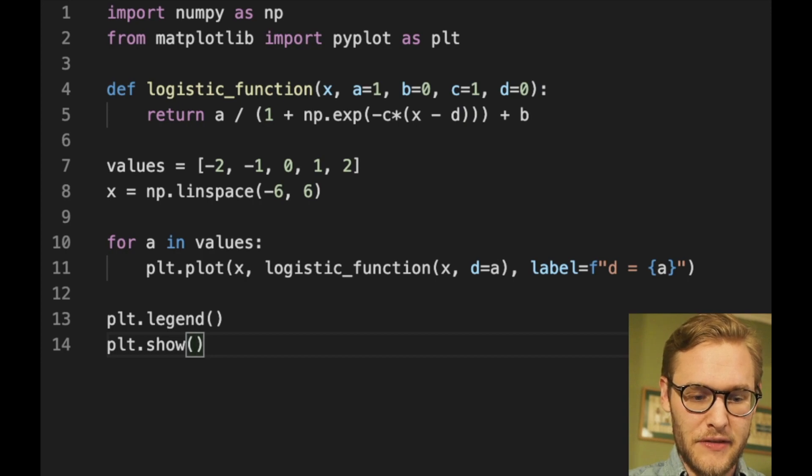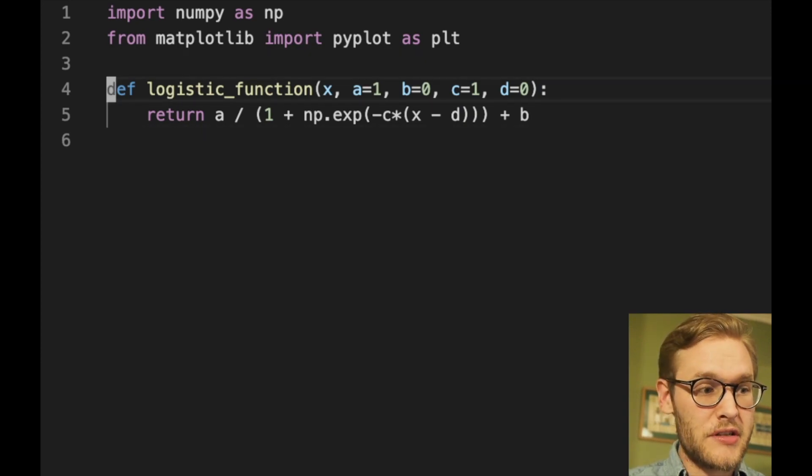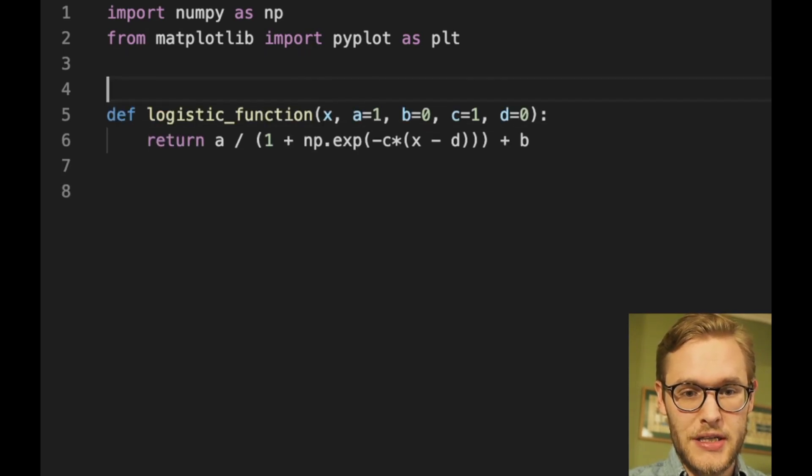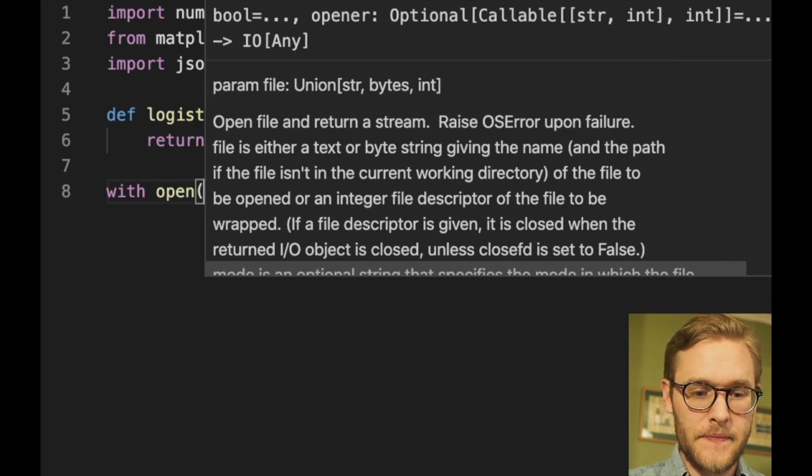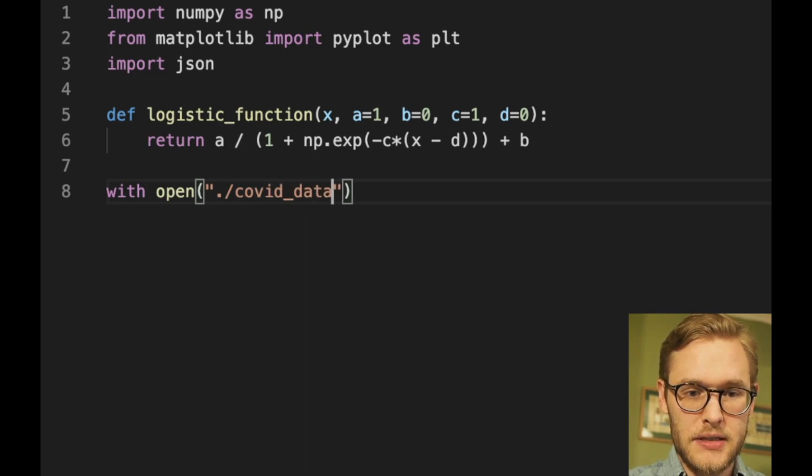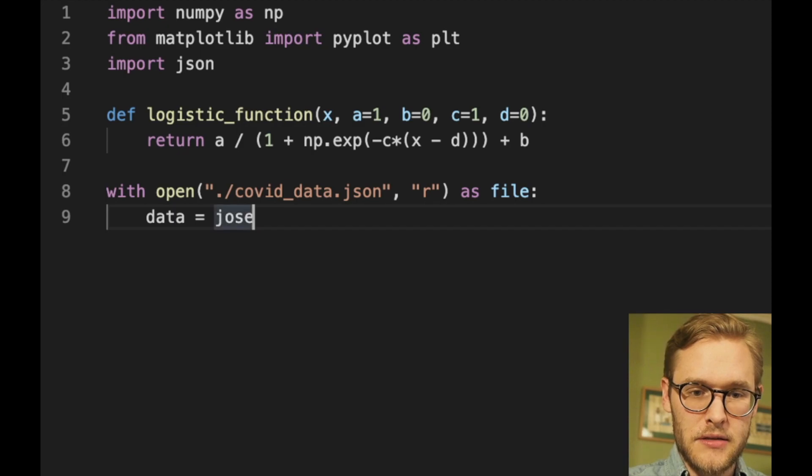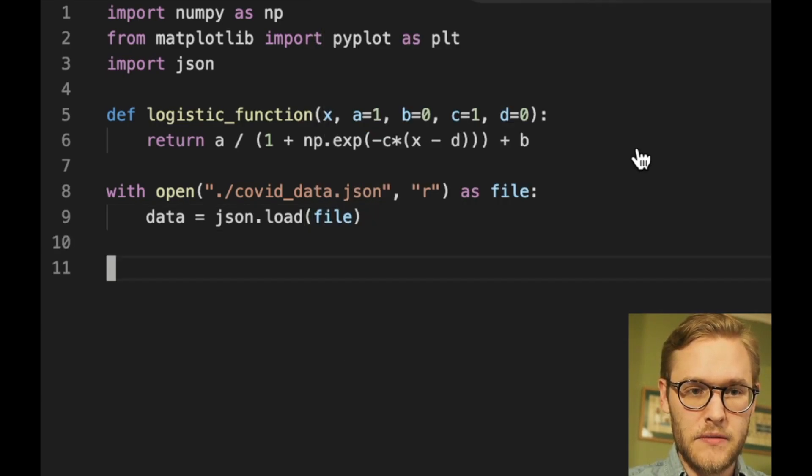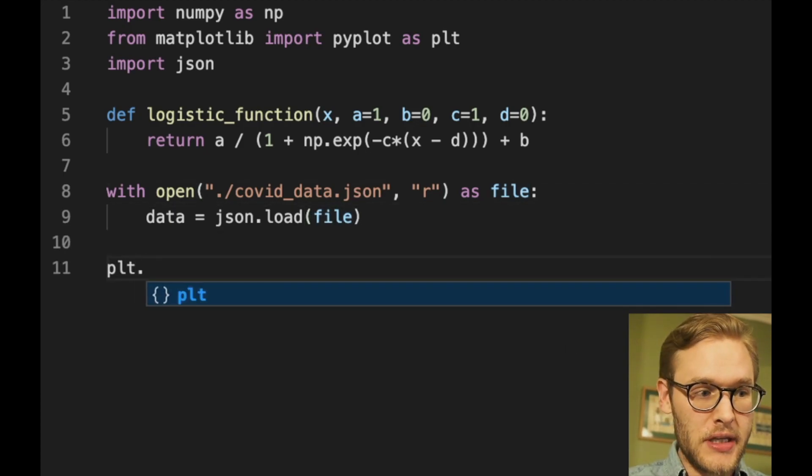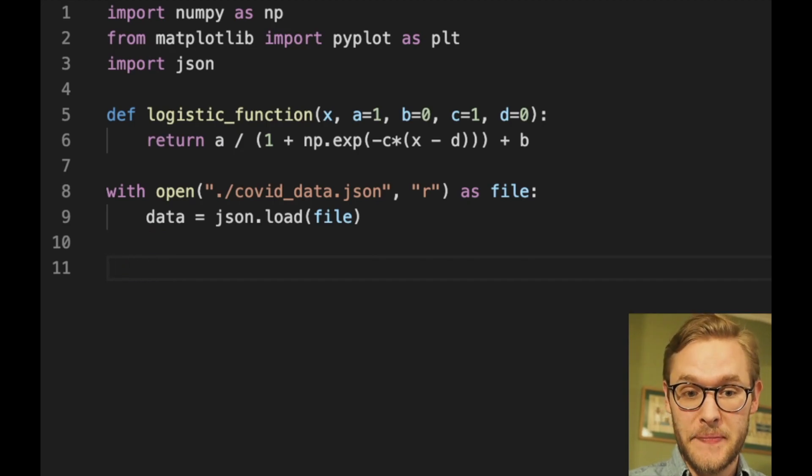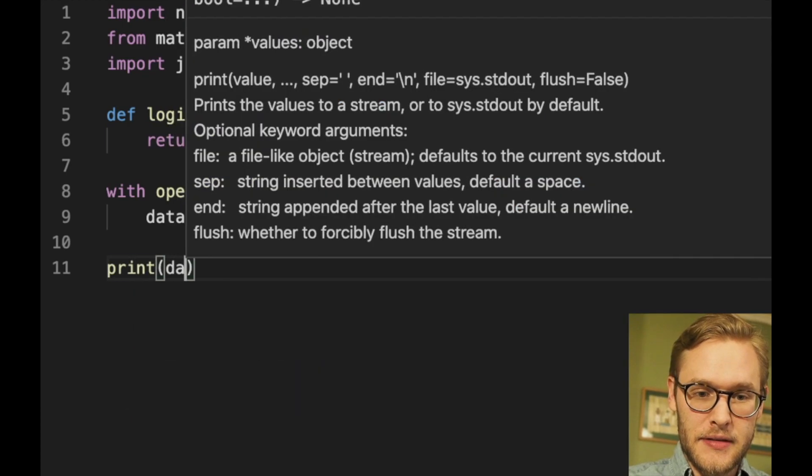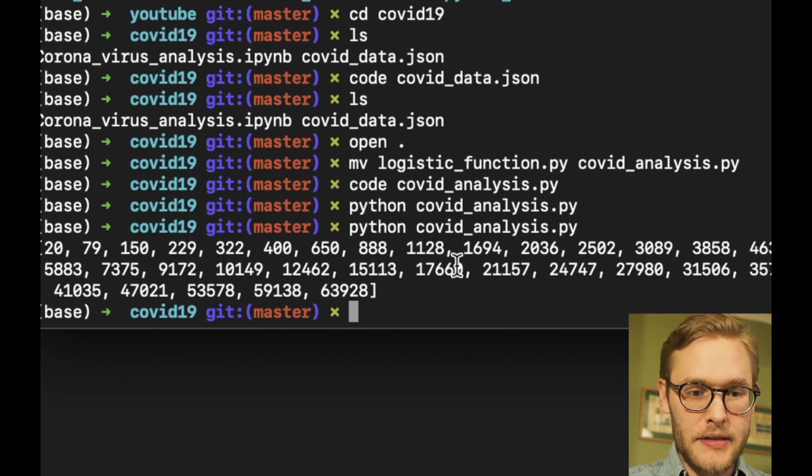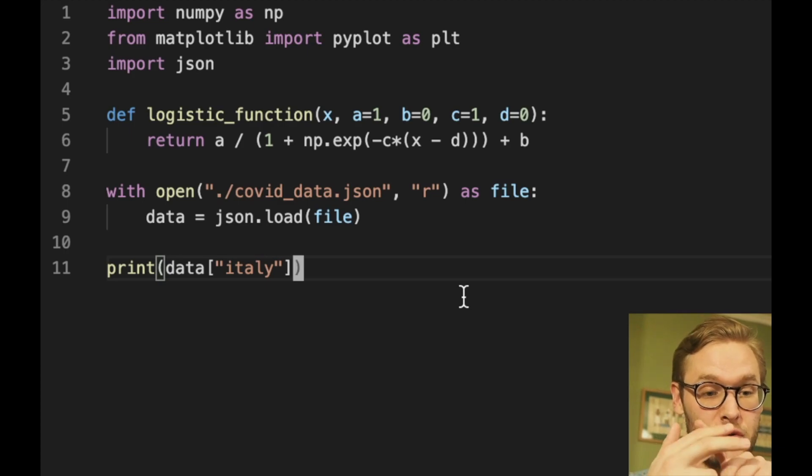Let's get back to our script where we looked at the logistic function. So here we have the logistic function which we'll be using a lot. First let us import the JSON to have a look at it. With a file path here we'll write the name of the data file called covid_data.json and we'll read as file, data equals json.load this file. Let's just try to run that to see if it works. Yeah, it did run so that's good.